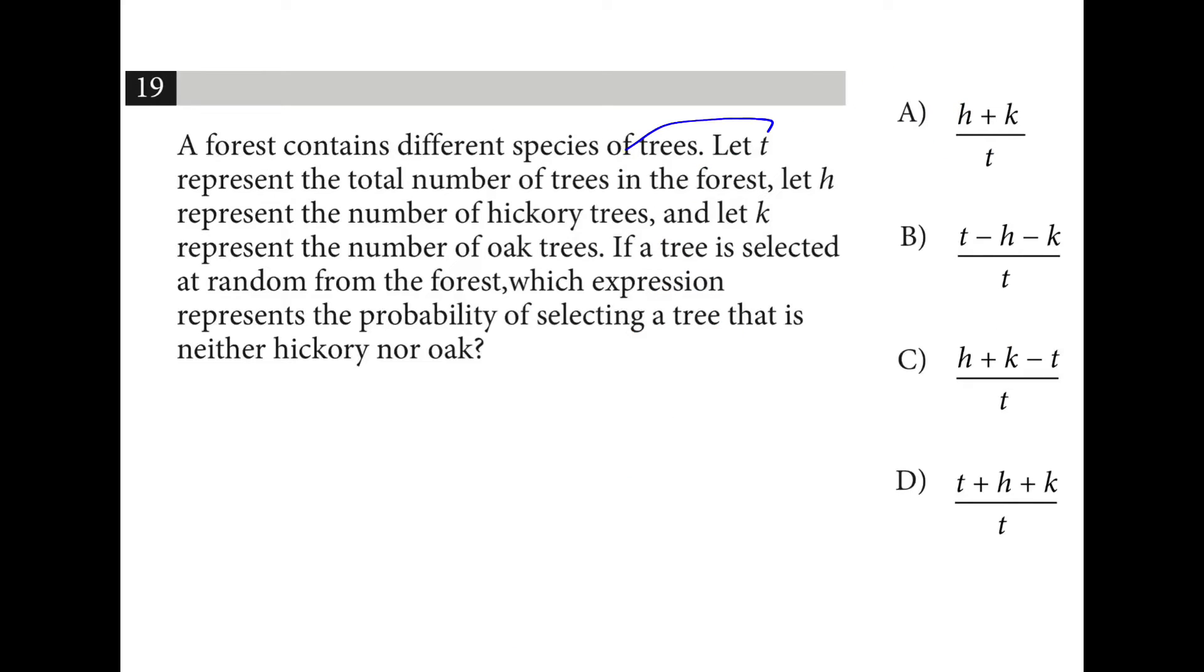So T is the total number of trees in the forest. That's going to be the denominator for sure. We know that H is the number of hickory, K is the number of oak trees, and then there's probably some other types of trees. If we want to know the probability of selecting a tree that is neither one of these, we take the total minus H minus O, divided by the total.